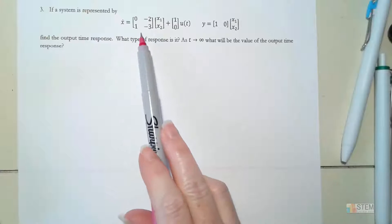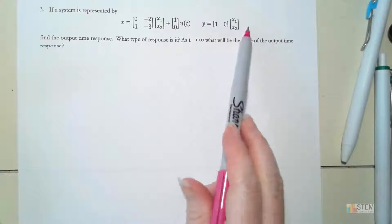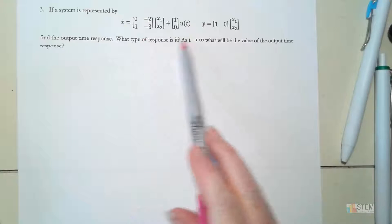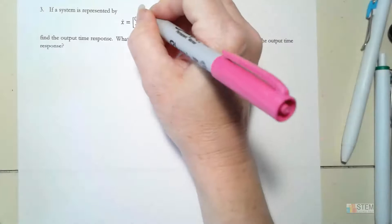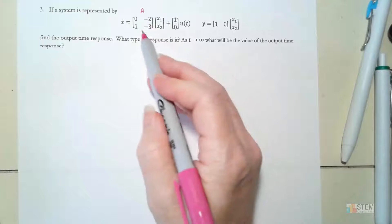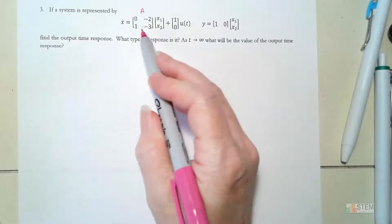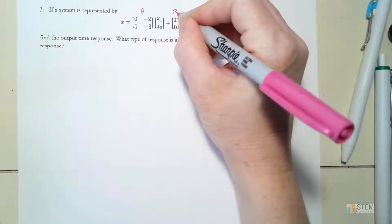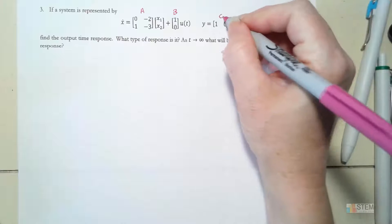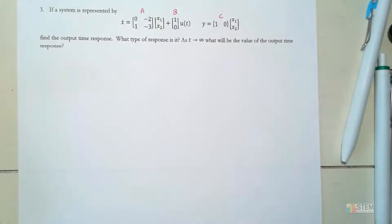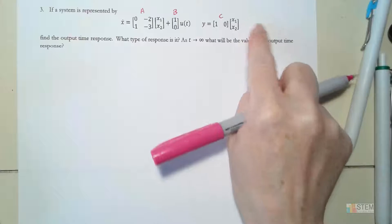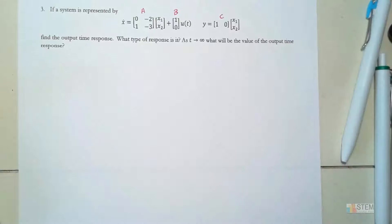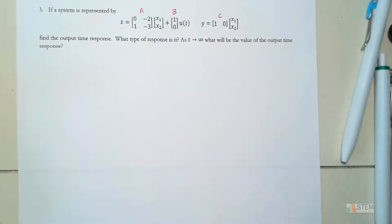So it says we've got a system represented by this state space representation. For our general notation, this first matrix will be matrix A, this is going to be matrix B, and then we'll call this one C. We don't have a matrix D — sometimes you'd have a matrix D, but not in this problem.